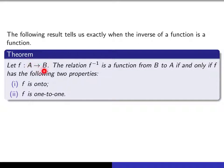If f is a function from A to B, then f inverse, which is always a relation from B to A, will be a function if and only if f is onto and f is one-to-one.